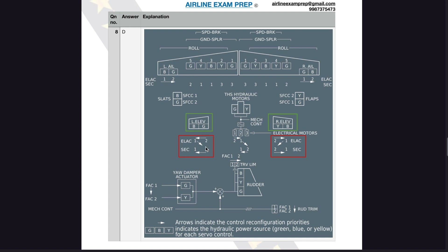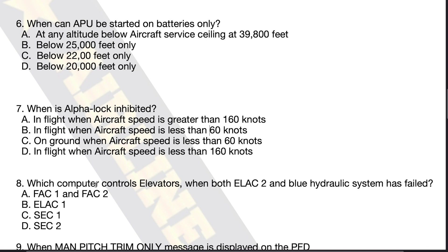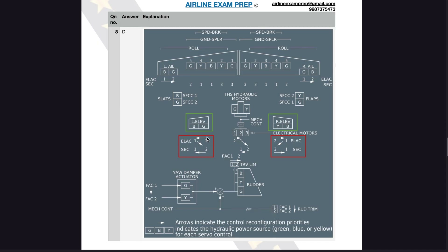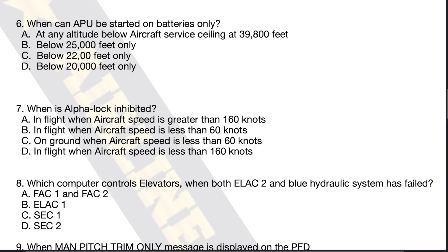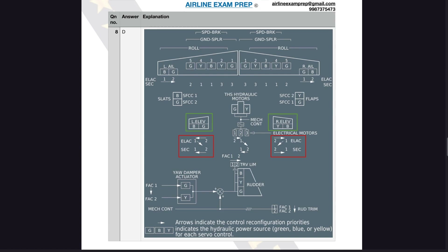It's a very simple diagram — this is the brain, this is the muscle. Just follow the vertical direction to connect the computer to the hydraulic system. Now let's solve the question: when both ELAC-2 and the blue hydraulic system have failed, which computer controls elevators? If we lose ELAC-2, ELAC-1 takes over, but ELAC-1 requires the blue hydraulics — and the blue hydraulics have also failed. So the aircraft automatically switches to SEC-2, which uses the green hydraulics to control the left elevator. The answer is Option D: SEC-2.